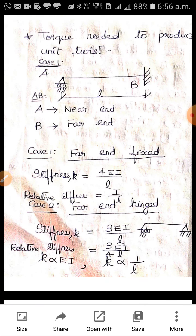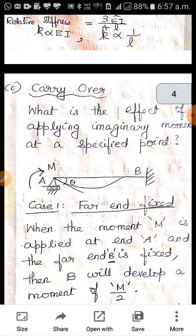Case 2: Far end hinged. A is a roller support, B is a hinge support. In this case, stiffness K equals 3EI/L, and relative stiffness equals (3/4)(I/L). So: far end fixed → relative stiffness = I/L; far end hinged → relative stiffness = (3/4)(I/L). K is proportional to EI and inversely proportional to the span L.